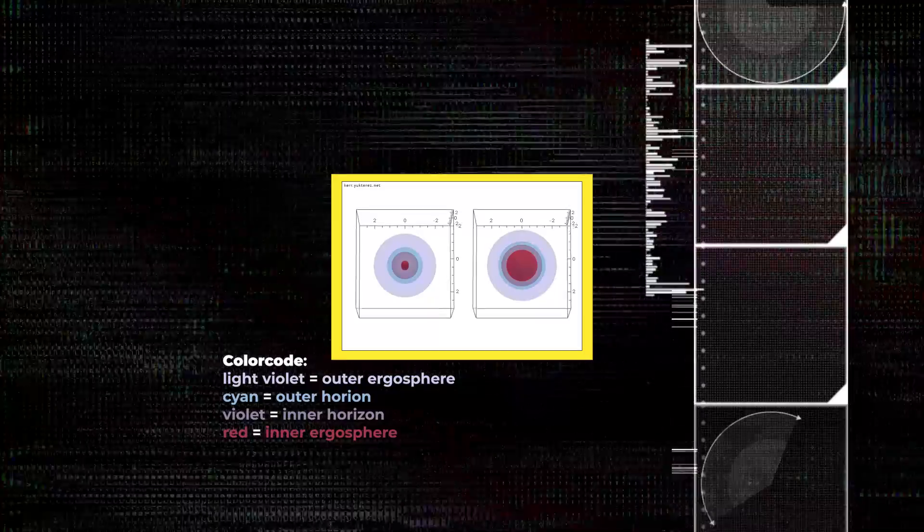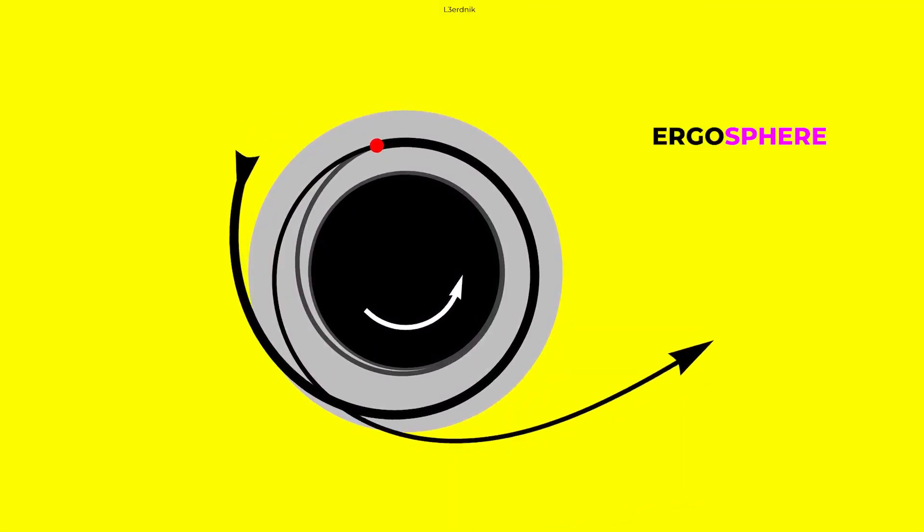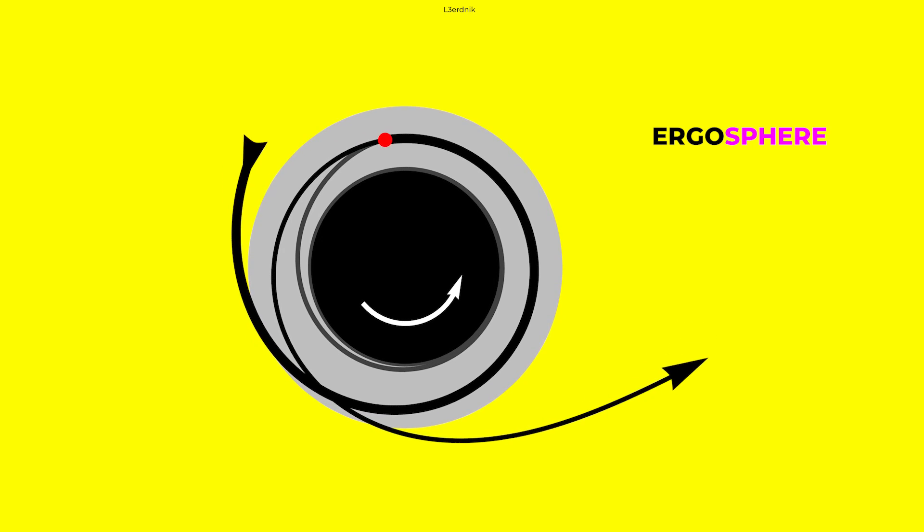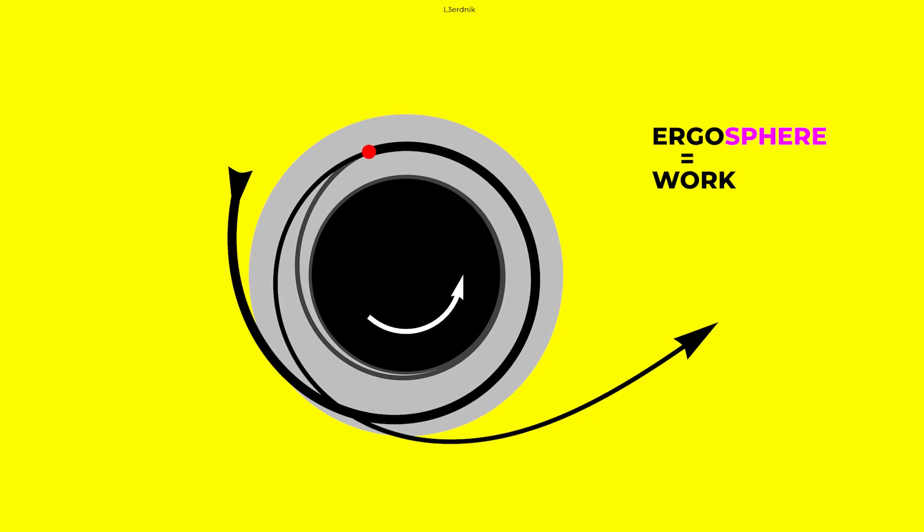Due to this centrifugal force, the ergosphere is basically shaped like a pumpkin. The name ergosphere is due to the fact that energy can be extracted from the black hole in this region via the Penrose process. Ergo is a Greek word that means work.